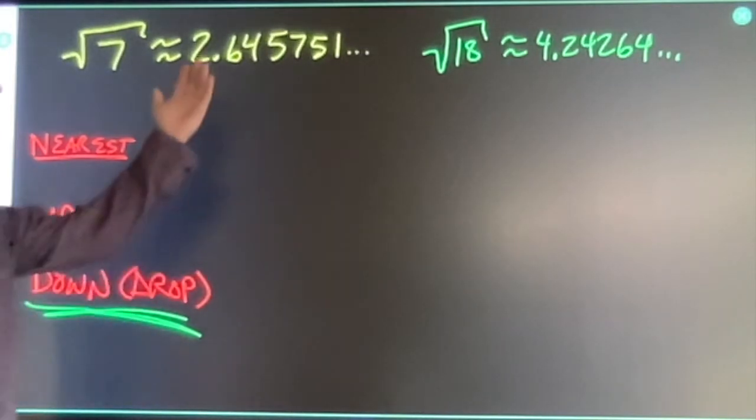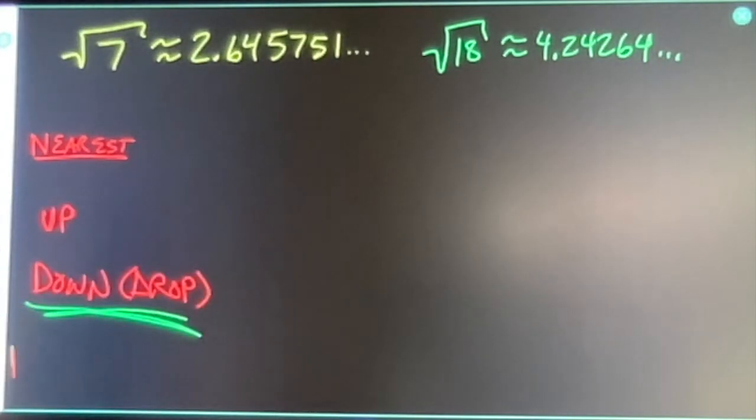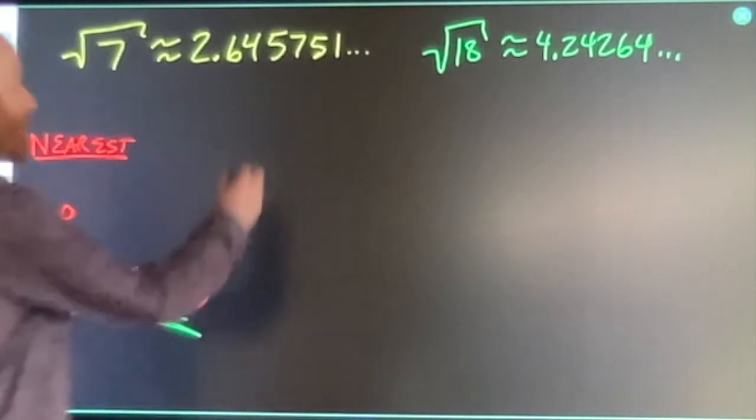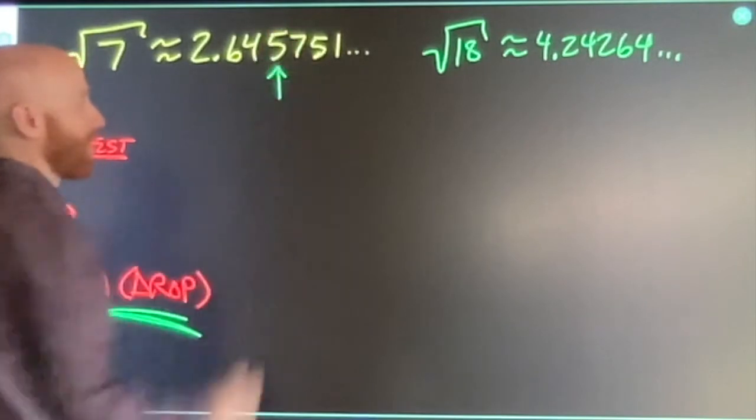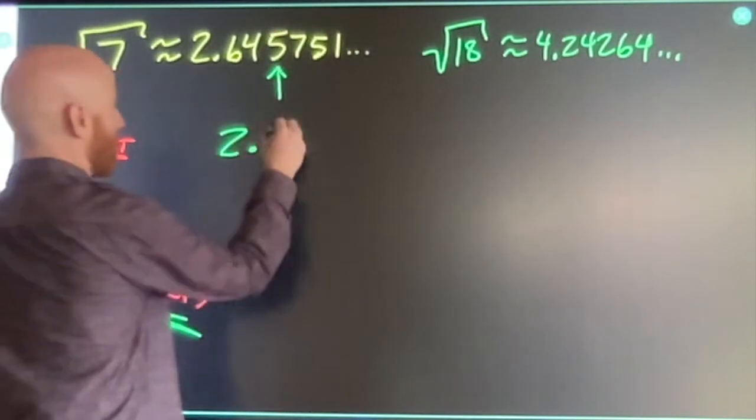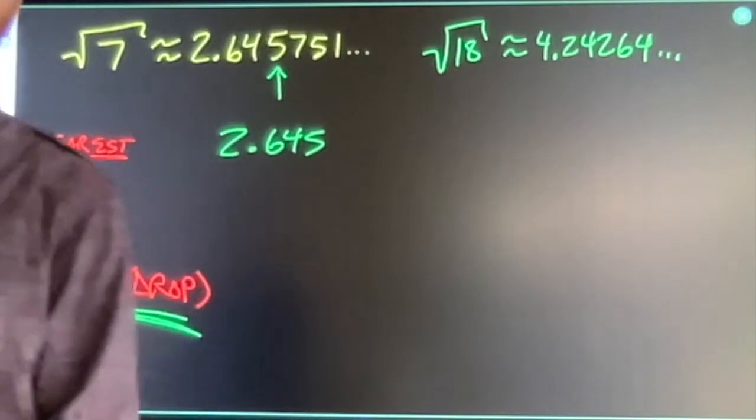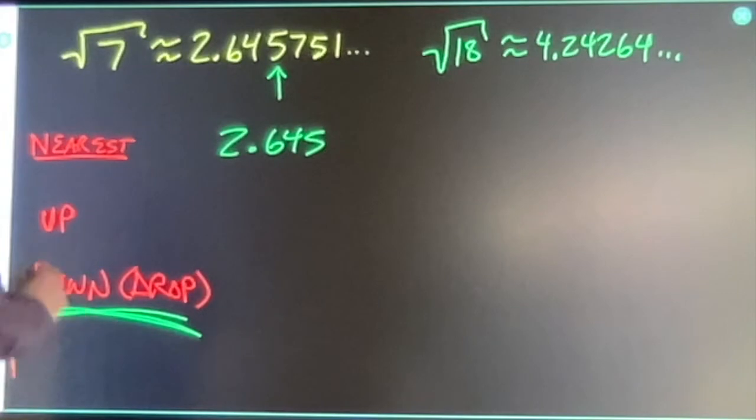So if I said I'm going to round this one down to the thousandth place, it means I want my third digit after the decimal point. Two point six four five. Done. I don't even look at anything that comes after it. I dropped that. That's drop rounding or rounding down.